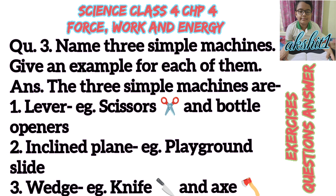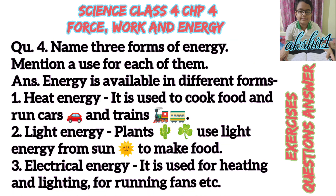Question number three: Name three simple machines and give an example for each. Answer: First, lever — example: scissors and bottle openers. Second, inclined plane — example: playground slide. Third, wedge — example: knife and axe.